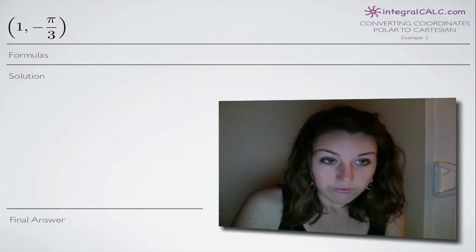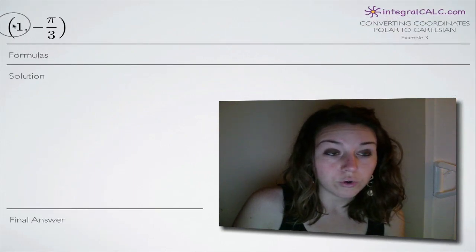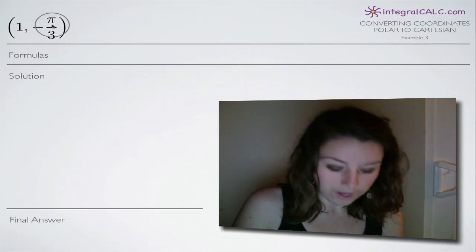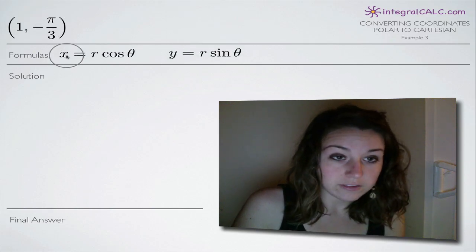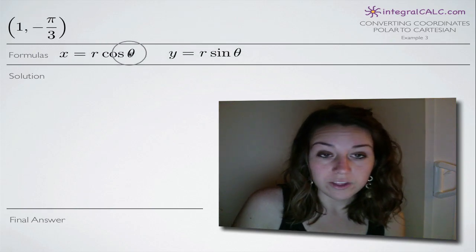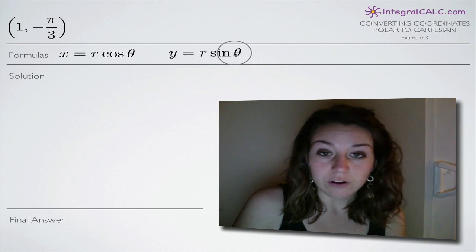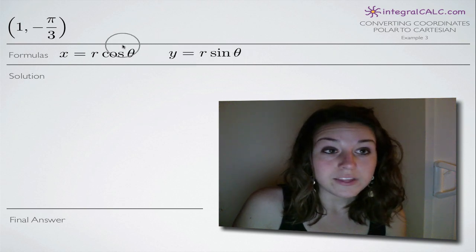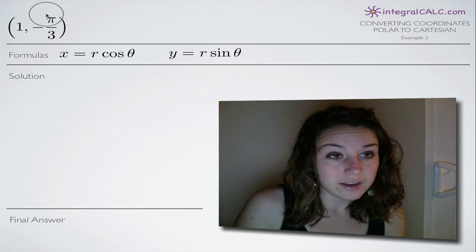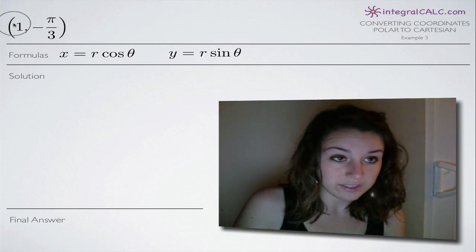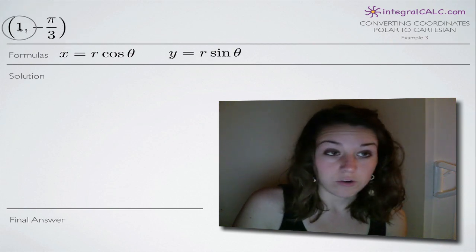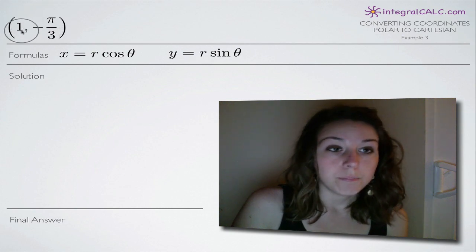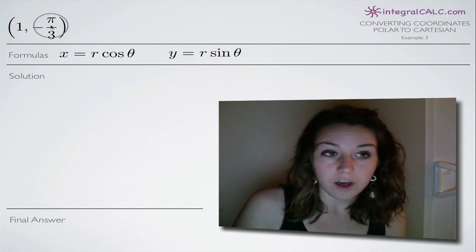Whenever we're dealing with converting polar coordinates to Cartesian coordinates, we're going to use the following two formulas: x equals r cosine theta and y equals r sine theta. The one thing to keep in mind is that when you have a set of polar coordinates like this, Cartesian coordinates are normally x, y, while polar coordinates are r, theta.